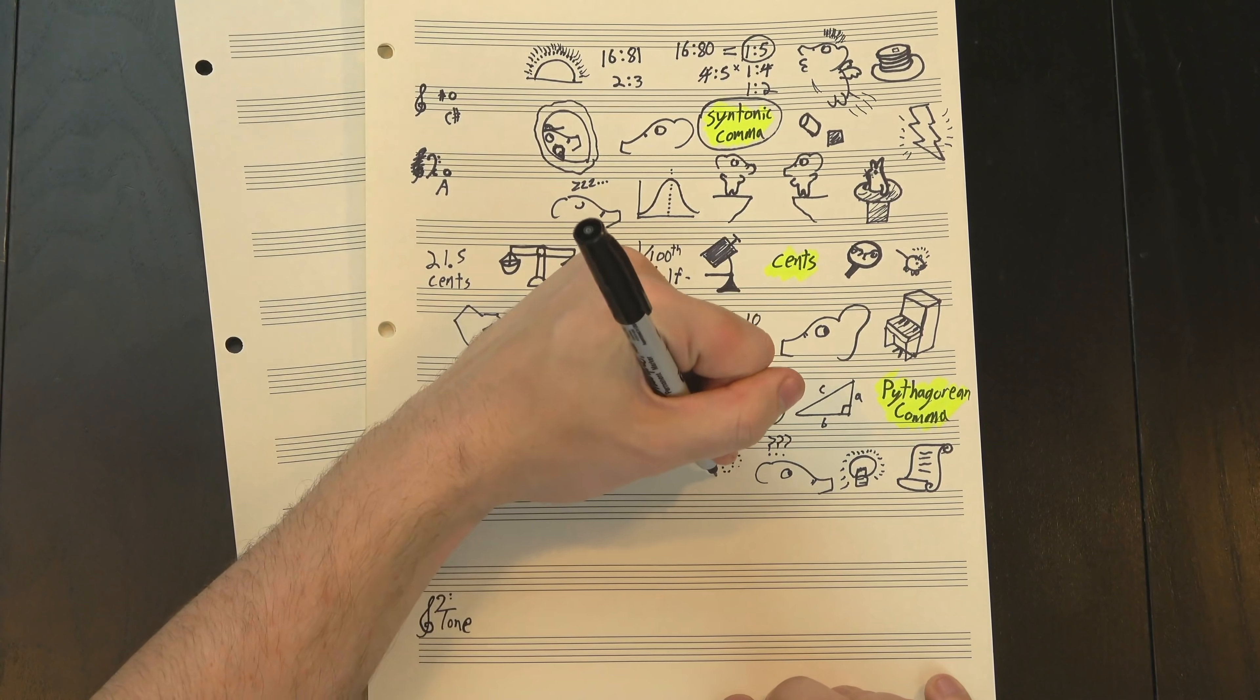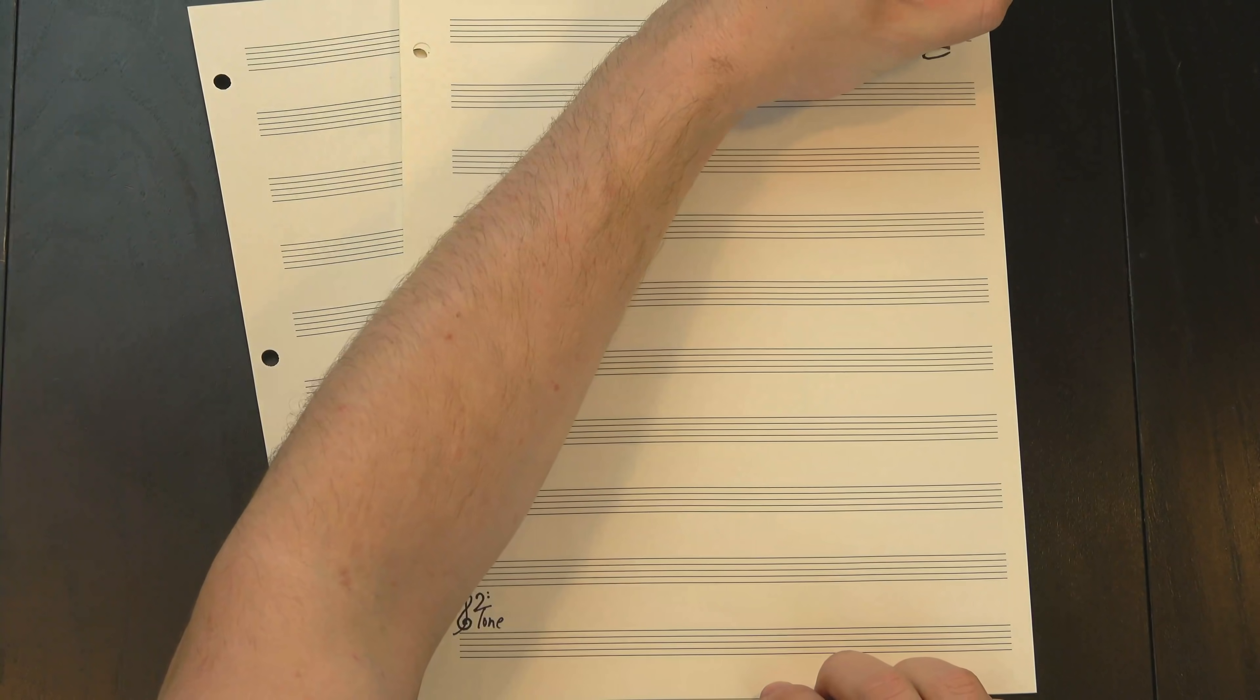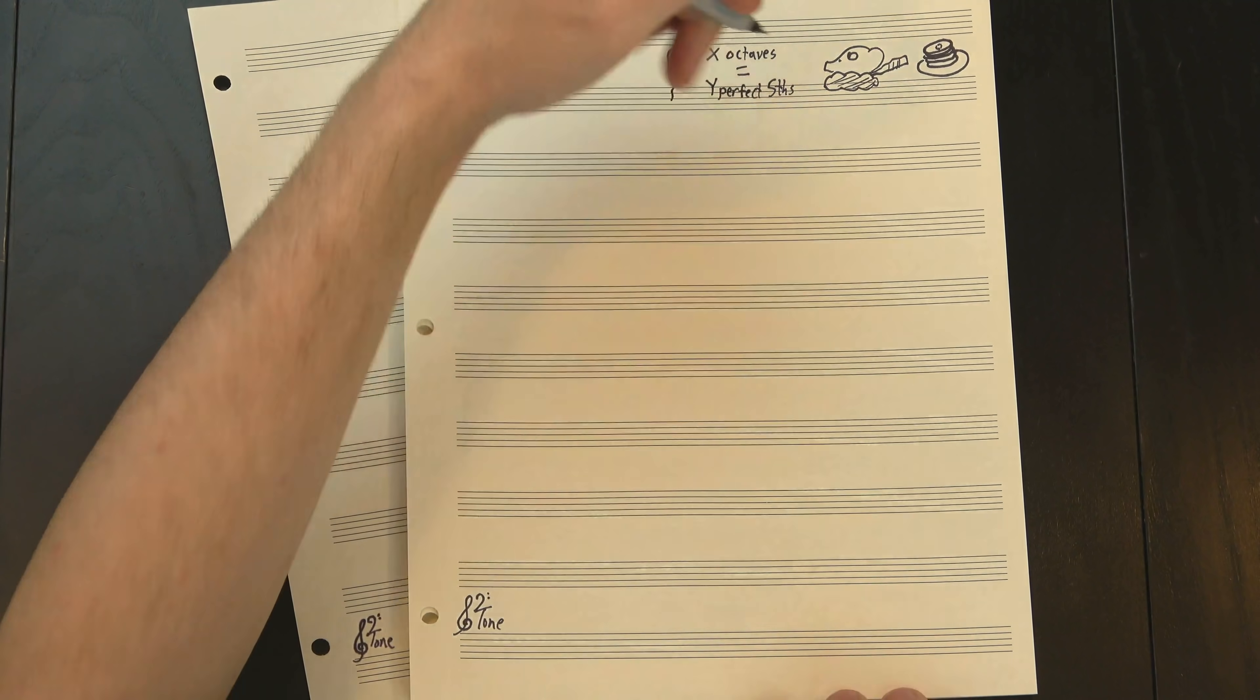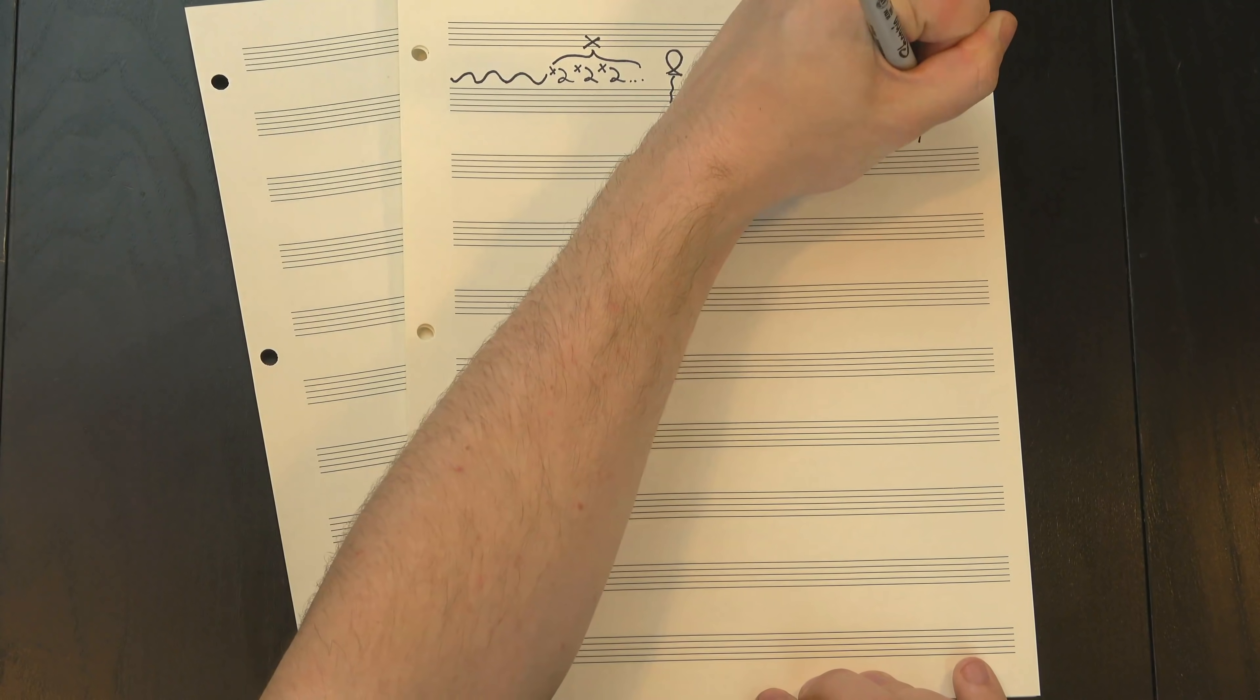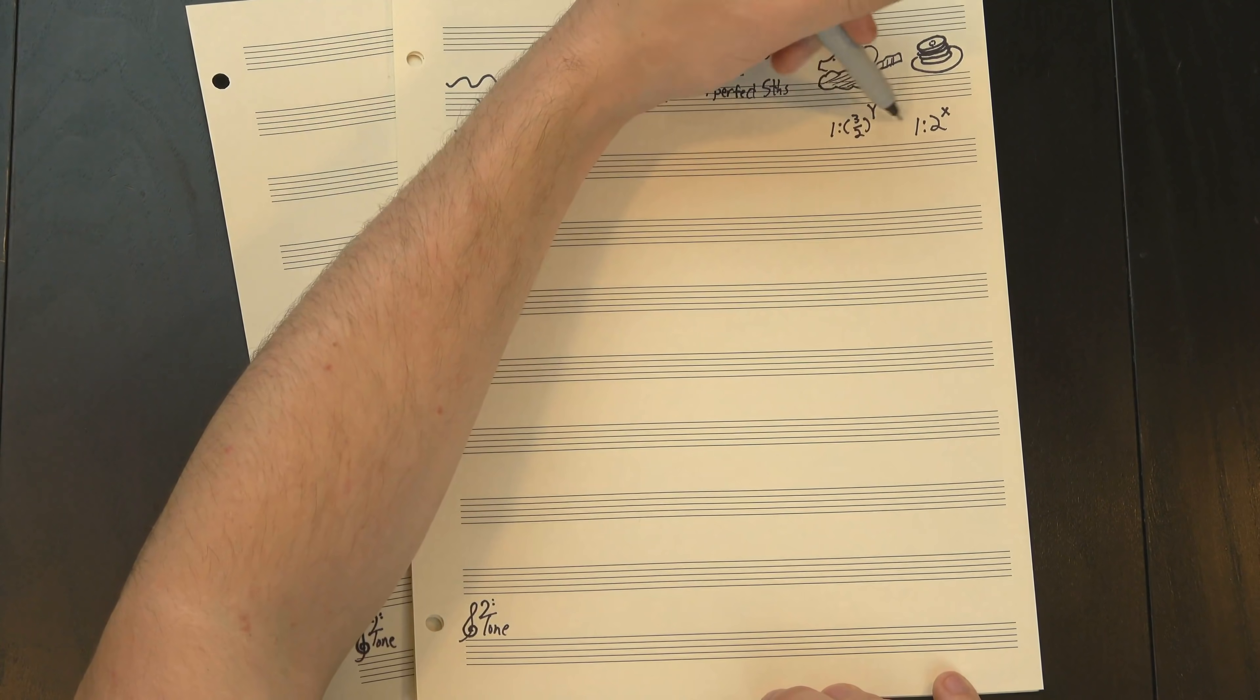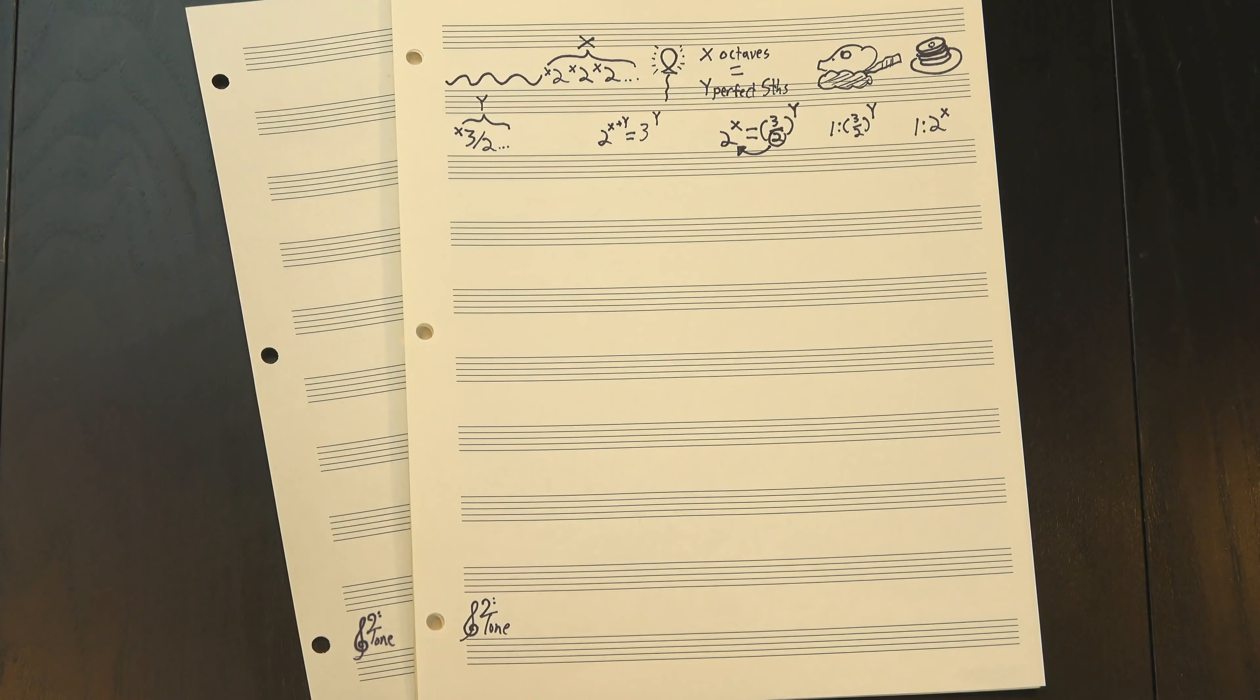The math gets a bit tricky here, so don't worry if you get lost in this next bit. I'll summarize the important parts at the end. But basically we're gonna use a technique called proof by contradiction, where you assume the opposite is true and then show that that leads to an impossible result. So let's start by assuming that if you keep going up by perfect fifths, you'll eventually get to a note that's some amount of octaves above the place you started. Let's say x octaves is the same as y perfect fifths. Well, going up x octaves means multiplying the frequency by 2, then 2, then 2, over and over x times, so the total ratio is 1 to 2 to the x. On the other hand, going up y perfect fifths means multiplying by 3, then dividing by 2, and repeating that process y times, for a ratio of 1 to 3 over 2 to the y. If these are the same ratio, that means 2 to the x equals 3 over 2 to the y, and we can simplify this by moving the denominator to the other side, giving us 2 to the x plus y equals 3 to the y.